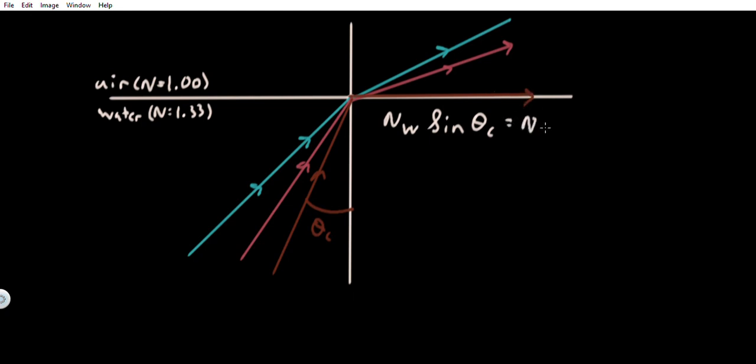equals the index of refraction of air times the sine of the refracted angle. And what is the refracted angle in this case? Well, this comes off parallel to the surface, which means it has to be 90 degrees. And if you remember from your trigonometry classes, the sine of 90 is just 1.